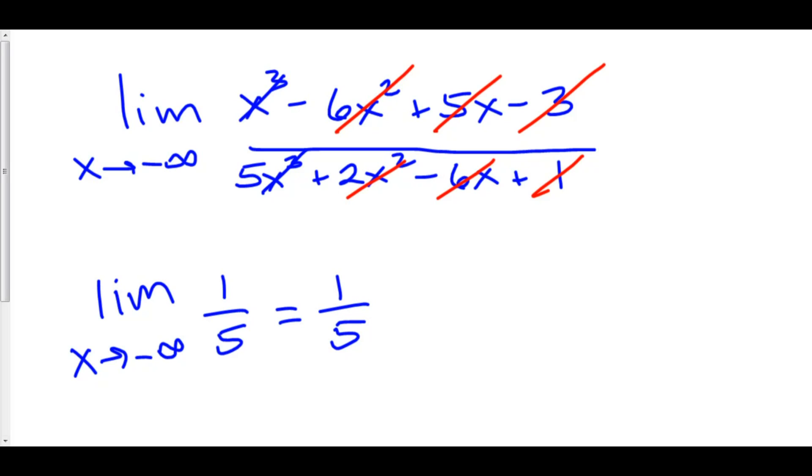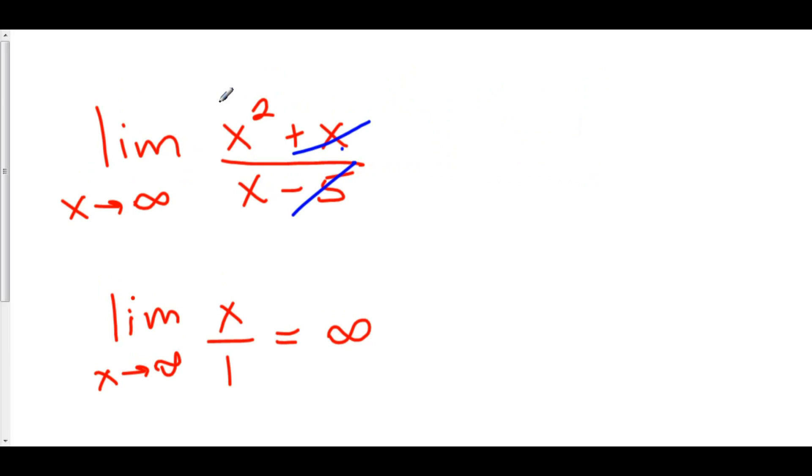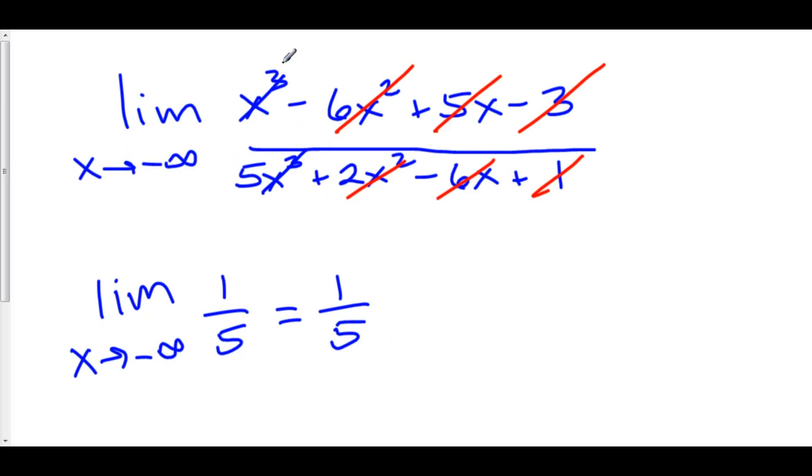So here's something to remember. If you have a bigger exponent on top than on the bottom, this thing goes off to infinity. If you have the same exponent on top as you have on the bottom, just look at the coefficients in front of your leading term. The answer here is 1 fifth.